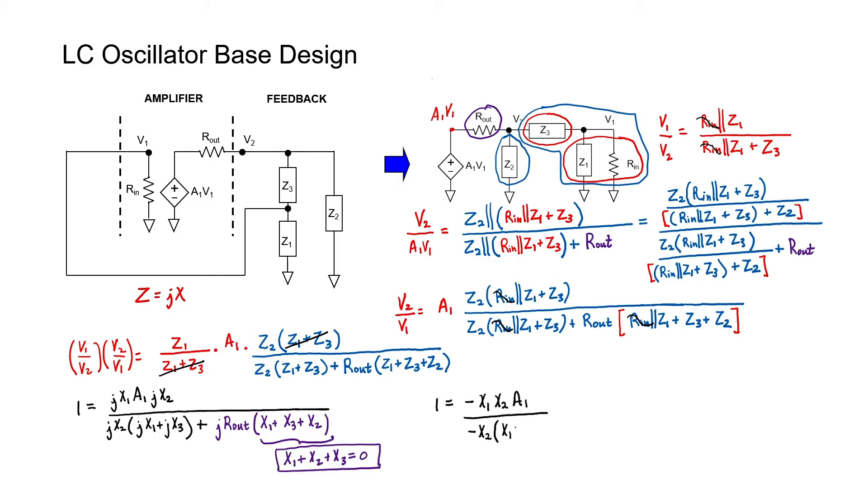From our equation up here, we know that X1 plus X3 has to be equal to negative X2. We conclude that the gain of the amplifier has to be minus X2 over X1 in order for this oscillator to have non-zero voltages V1 and V2.